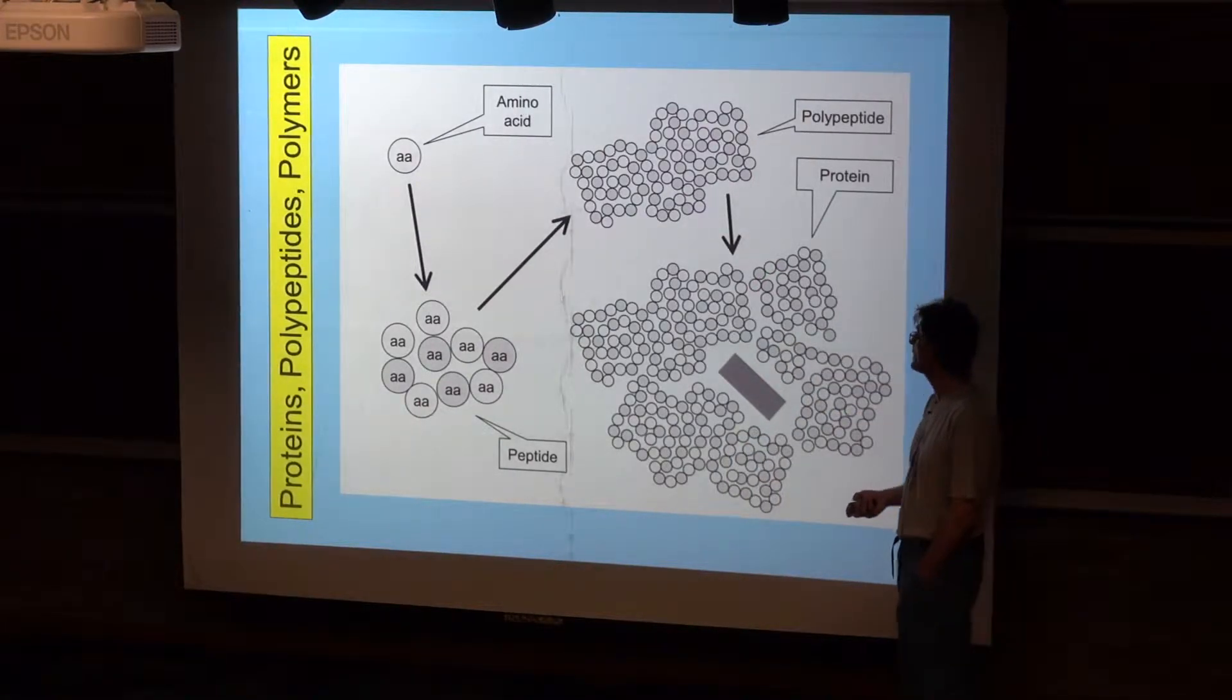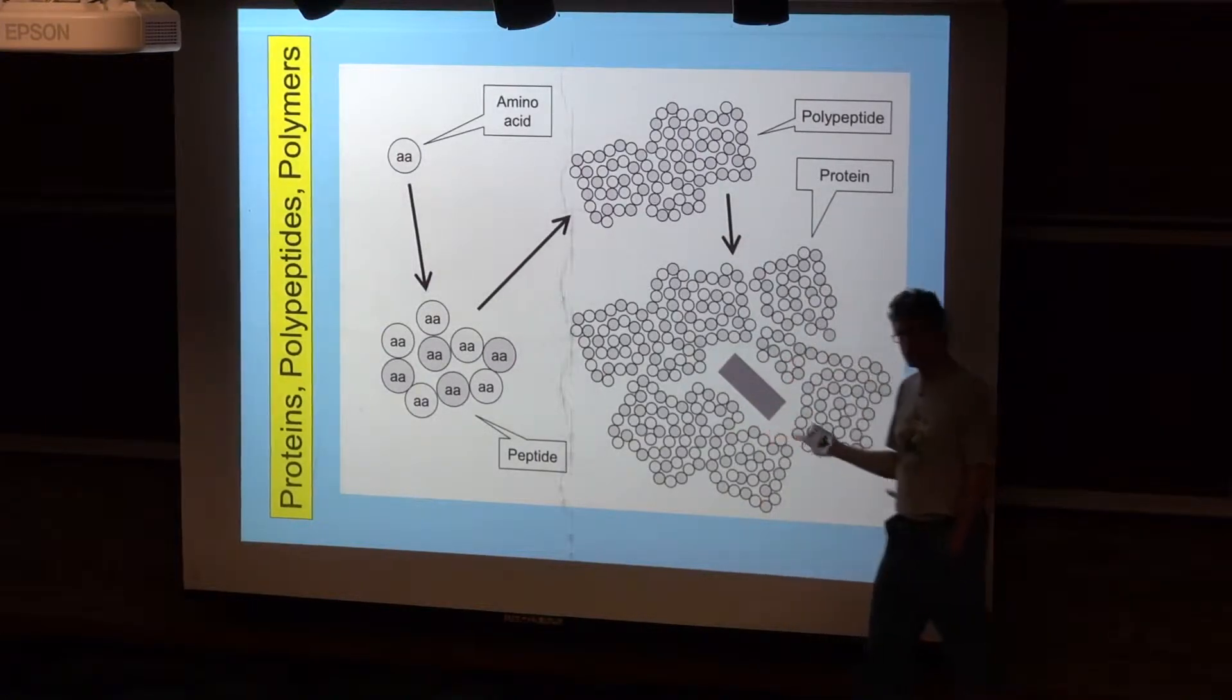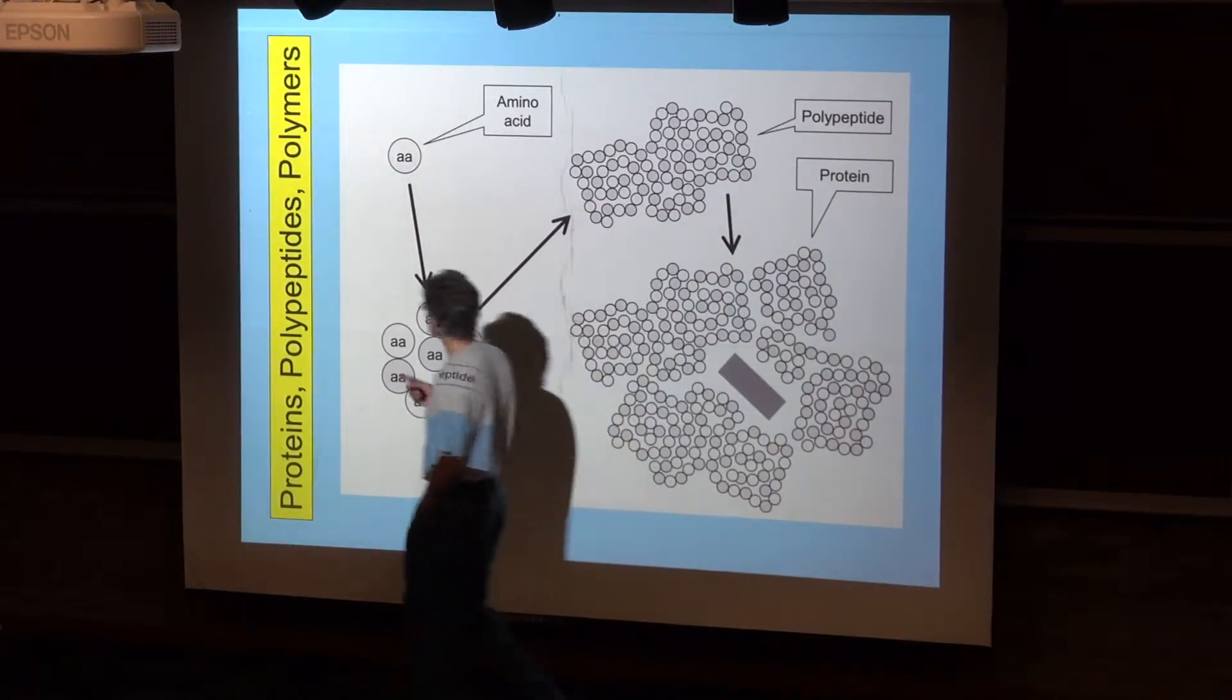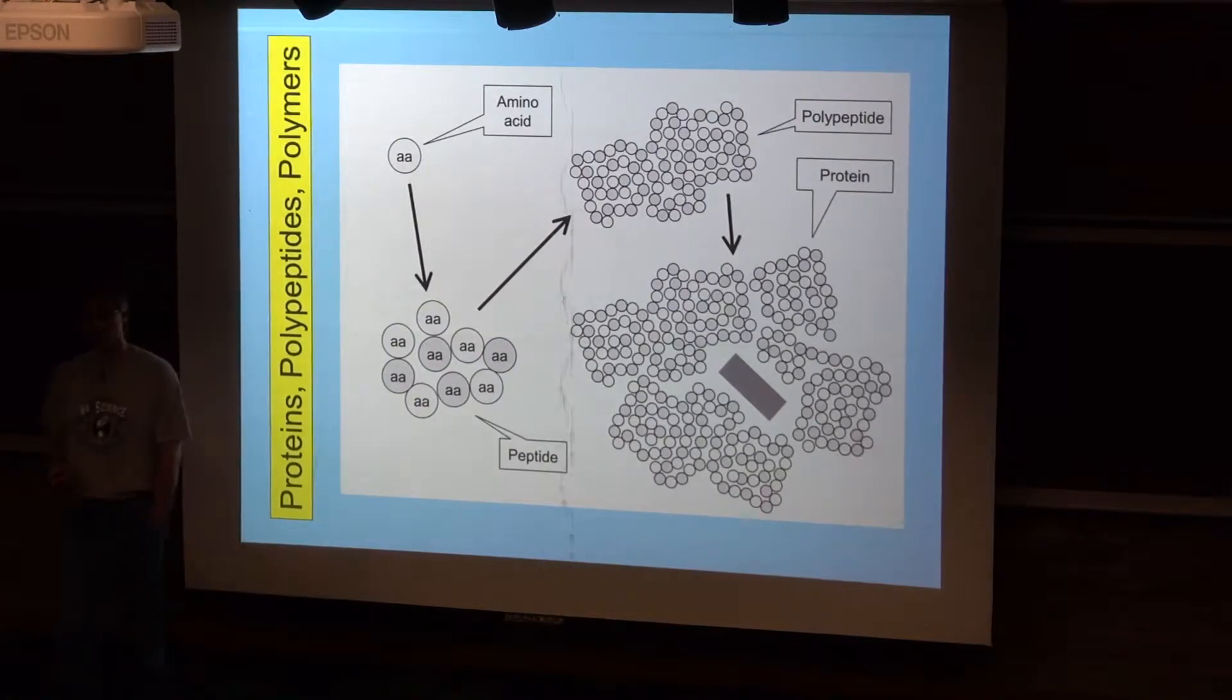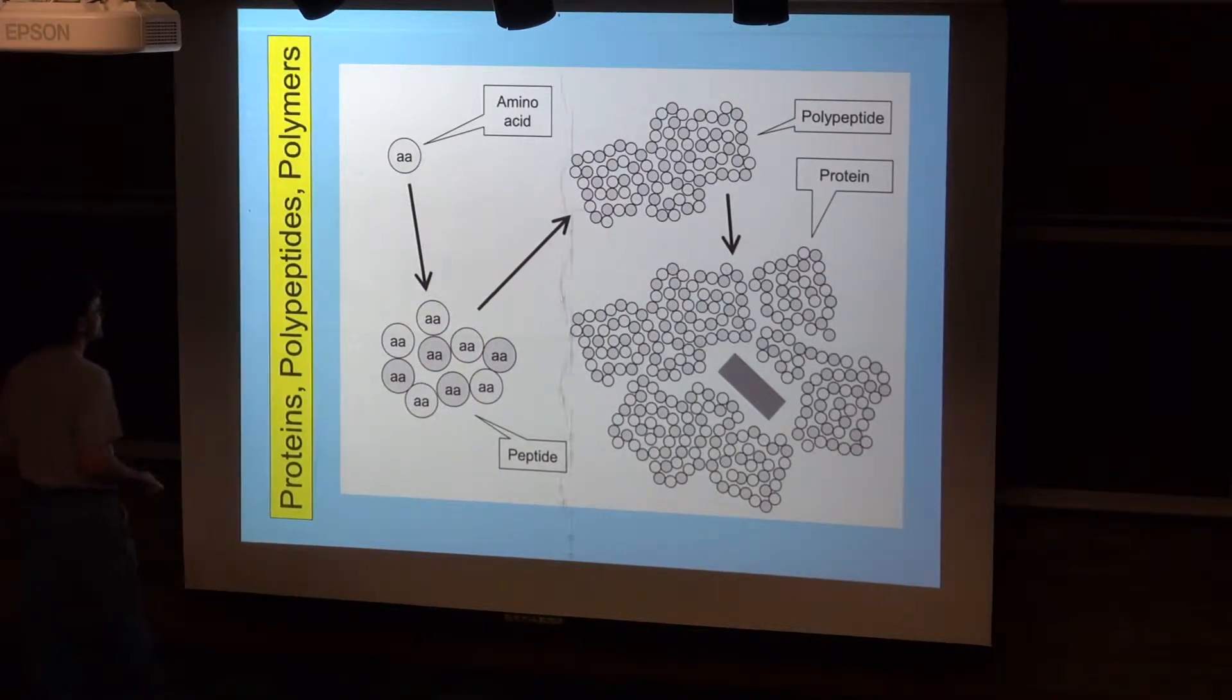This is how proteins work. In proteins, the subunit is an amino acid, which I'm just representing as a circle here, and of course the AA stands for amino acid. The process of synthesis of proteins is actually the process of the synthesis of what are known as polypeptides.